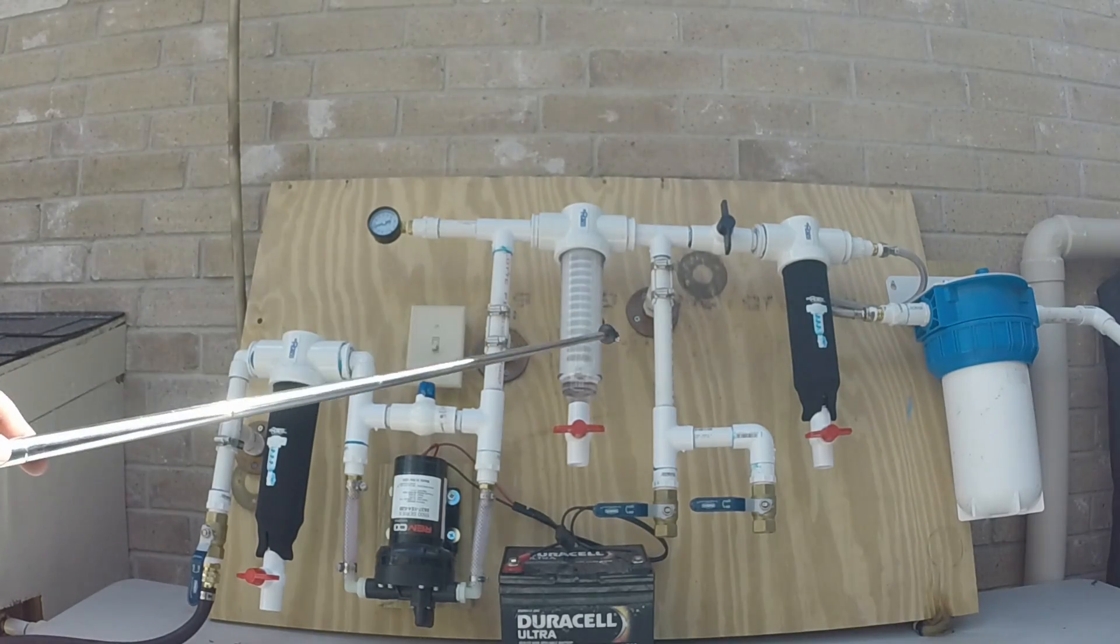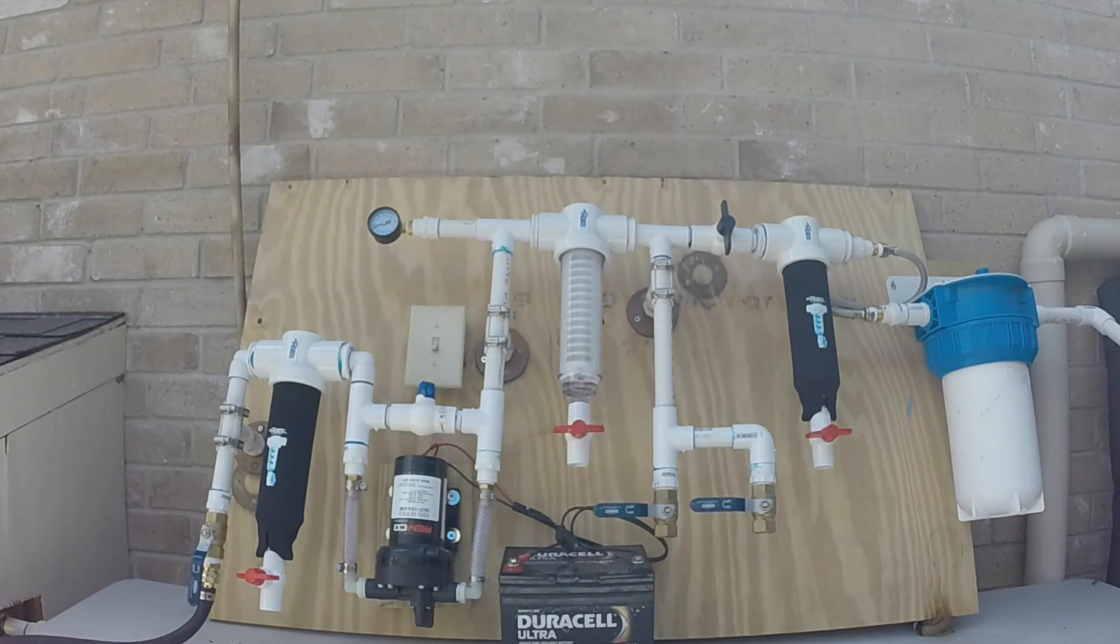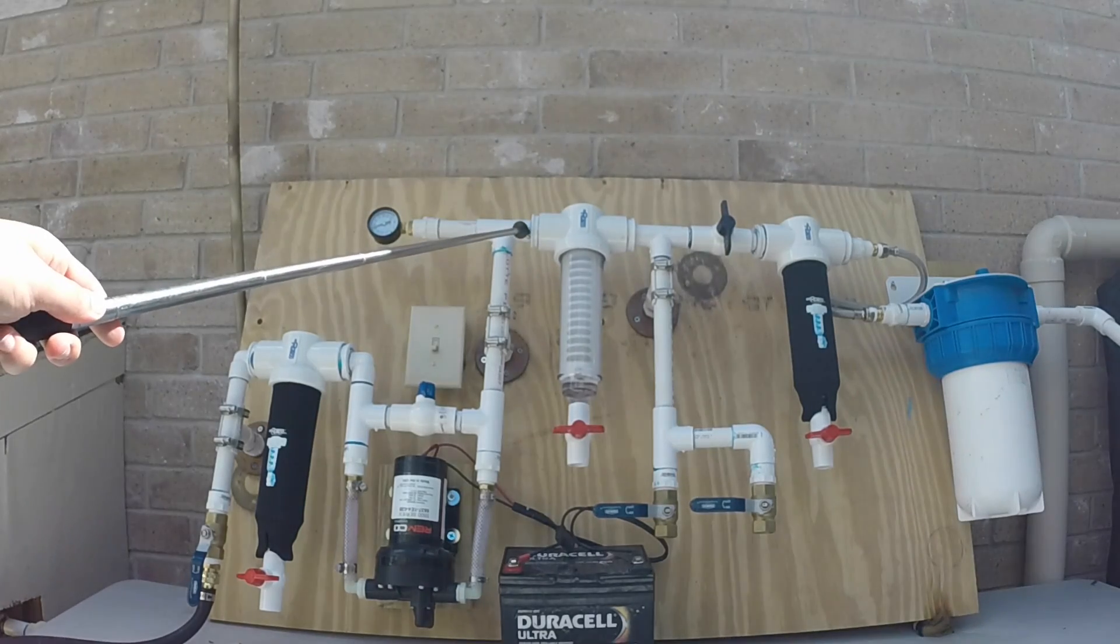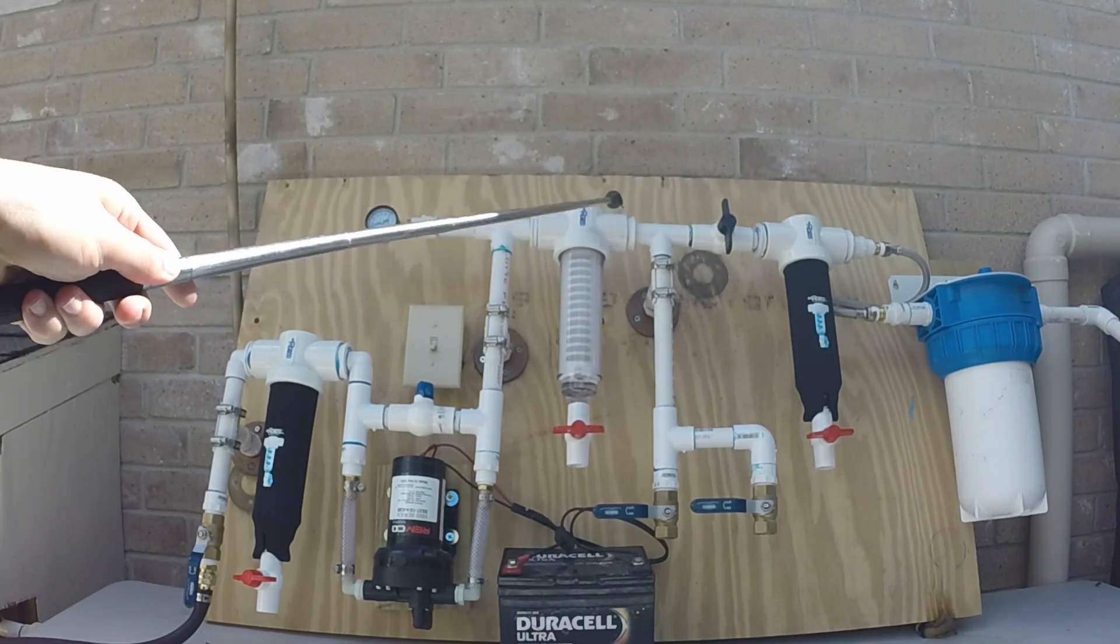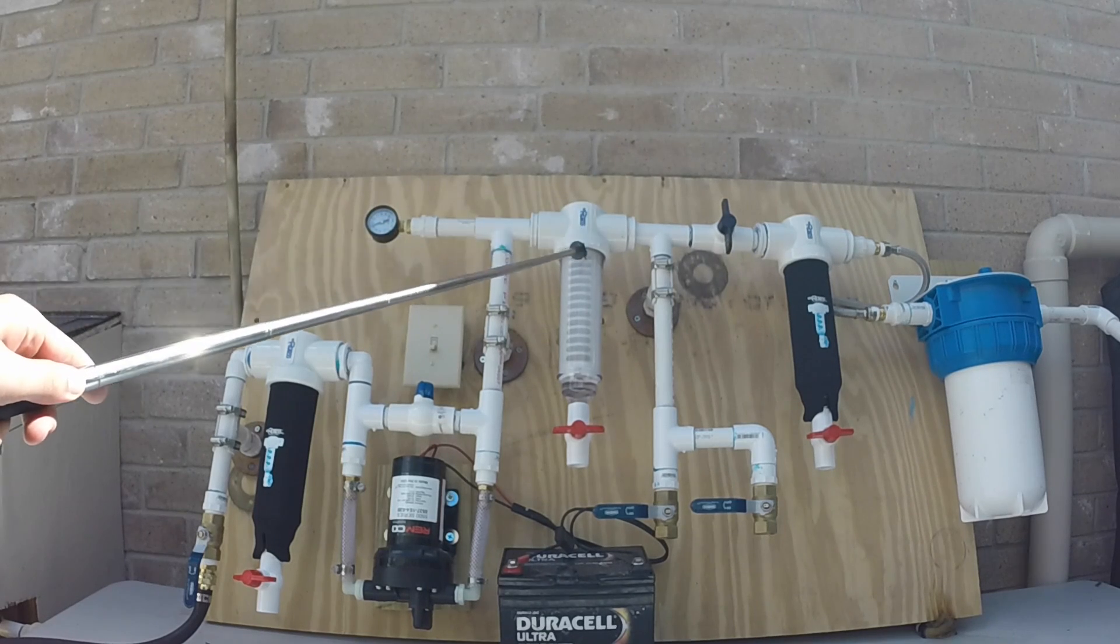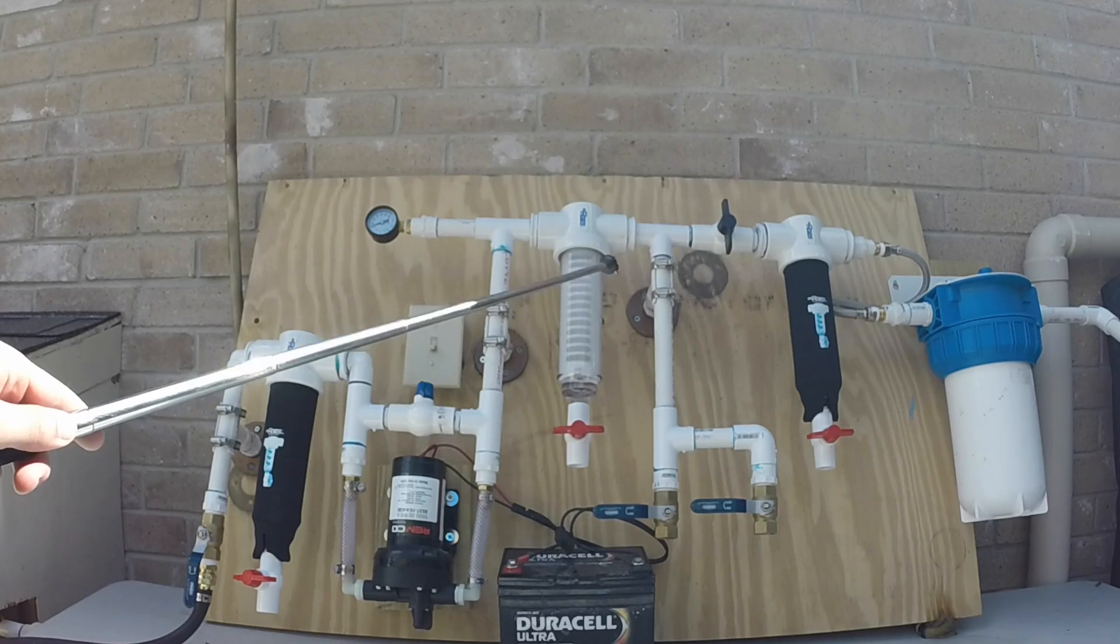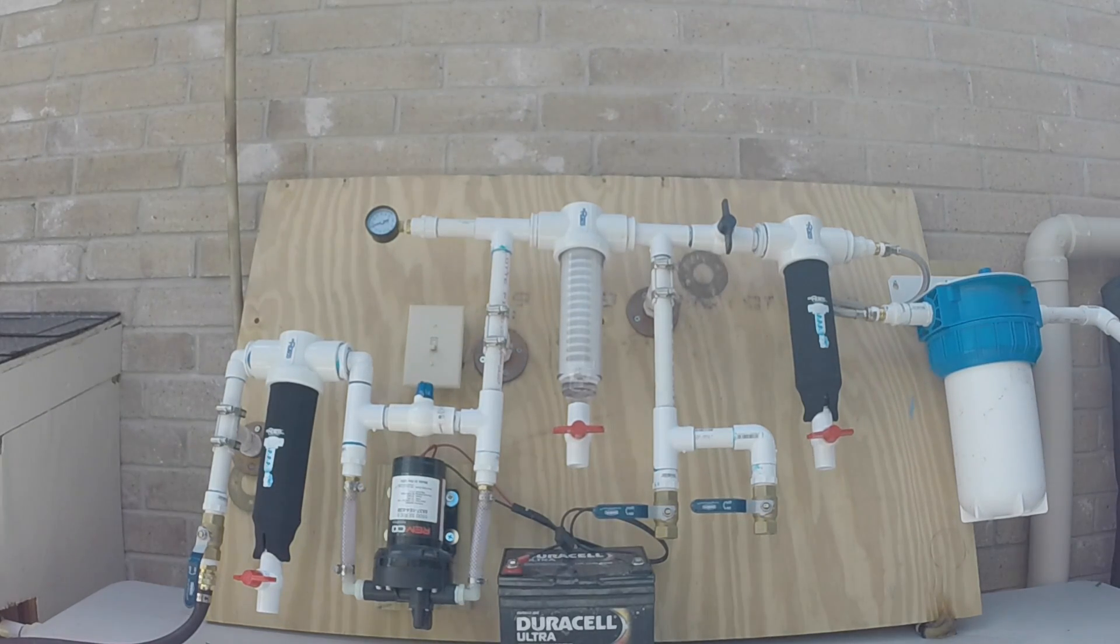Number one is the Rusco spin down filter. This is changed from three quarters of an inch to a one and a half inch Rusco spin down filter. I did reduce the inlet size and outlet to three quarter inch, but the filter itself is a one and a half inch. This allows me to filter much more water before I have to clean my filters.